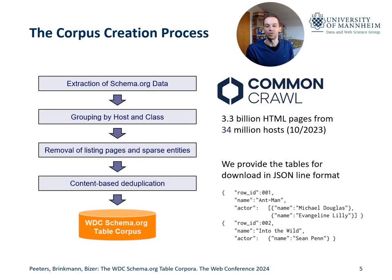The starting point of the creation of the corpora is the Common Crawl, from which we extract the Schema.org annotated data, then group the data by host and entity class, which results in one table per host containing all entities of the class. We further remove listing pages and sparse entities, followed by a deduplication step in the end. The final tables are available for download in the JSON Lines format, as shown on the bottom right of this slide.